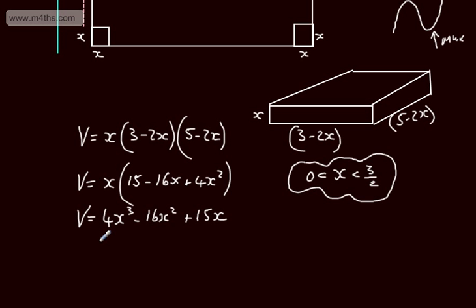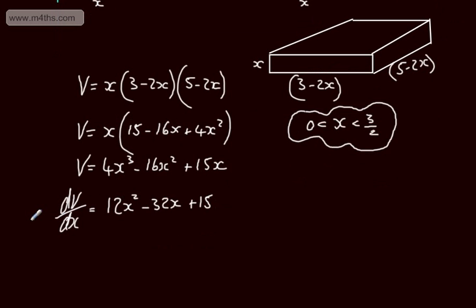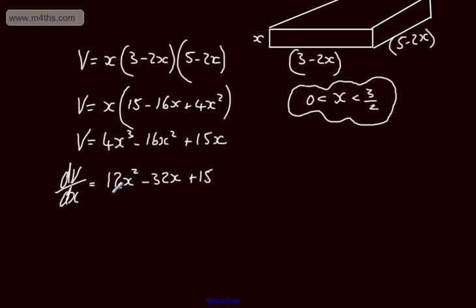So what we want to do is differentiate the volume with respect to the side length. So dV by dx, that's going to give me, multiplying down by the power drop and the power by 1, 12x squared minus 32x plus 15. So what we can say then for max, and we're looking for a maximum value of X, so we can say now for max, the derivative dV/dx will be equal to 0. We now have a quadratic in X that we need to solve.